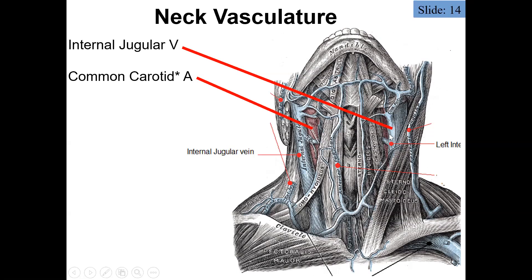Here we see the internal jugular vein, and for reference the smaller external jugular vein, which is a more superficial vein draining blood from the face and scalp. The internal jugular vein drains blood from the internal structures — the brain and head. The common carotid artery will eventually split into the internal carotid and external carotid: the internal carotid takes blood toward the brain and internal structures, whereas the external carotid takes blood to the face, scalp, and more superficial structures.